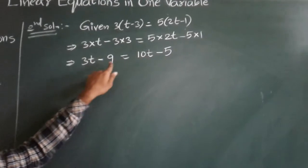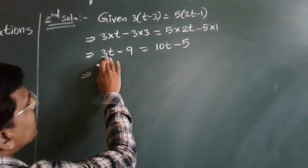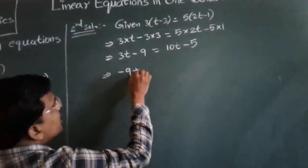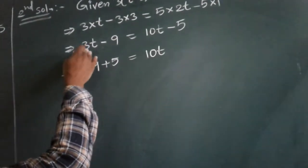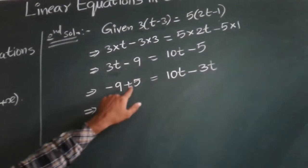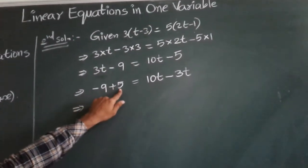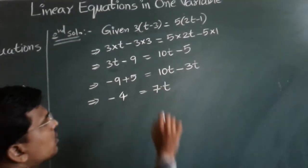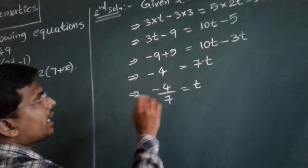Variables are on both sides and constant numbers are on both sides. So we send variables to one side and constants to the other side. I am sending minus 5 to the left hand side — it becomes plus 5 — and sending 3t to the right hand side — it becomes minus 3t. So minus 9 plus 5 equals minus 4, and 10t minus 3t equals 7t. To find the value of t, I send 7 to the left hand side as a divisor, so t equals minus 4 by 7.